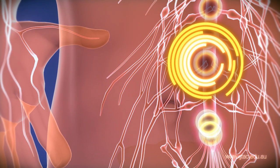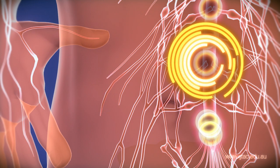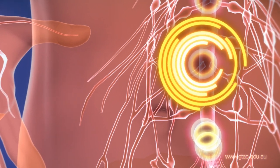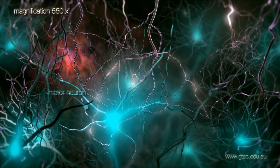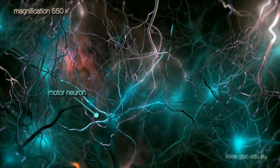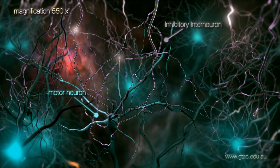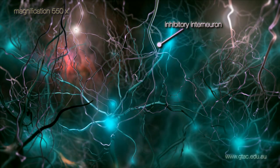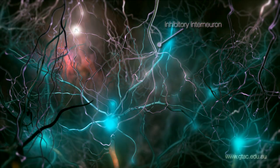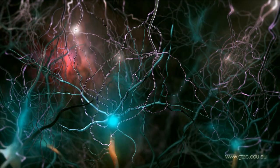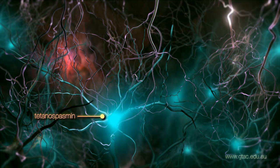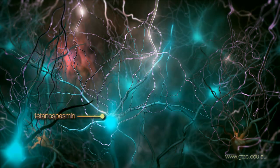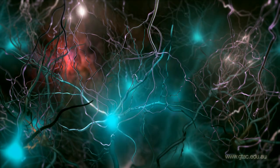We will now zoom into the spinal cord tissue. In the spinal cord, the motor neurons are controlled by inhibitory interneurons. These interneurons prevent the motor neurons from constantly firing. Tetanospasmin toxins arriving in the motor neuron cell body interfere with the action of the inhibitory interneurons.